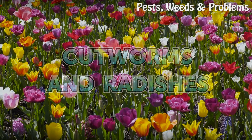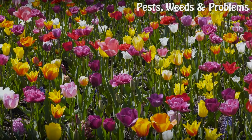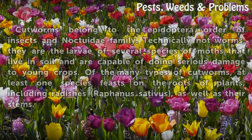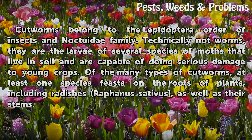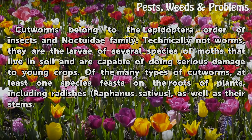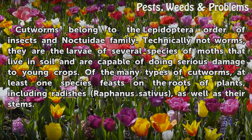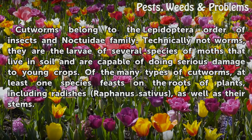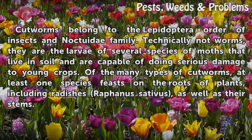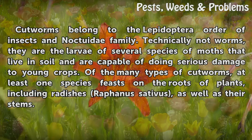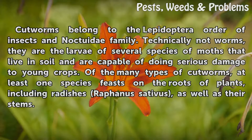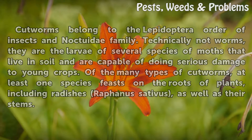Cutworms and radishes: cutworms belong to the Lepidoptera order of insects and Noctuidae family. Technically not worms, they are the larvae of several species of moths that live in soil and are capable of doing serious damage to young crops. Of the many types of cutworms, at least one species feasts on the roots of plants including radishes (Raphanus sativus) as well as their stems.